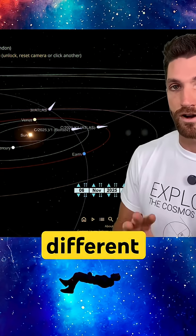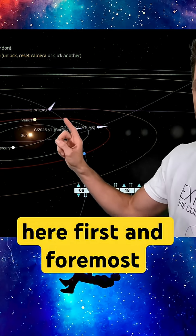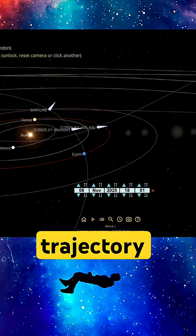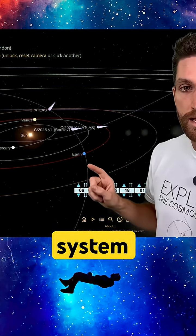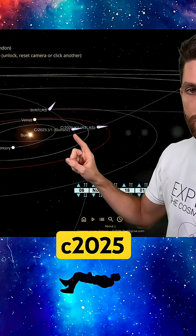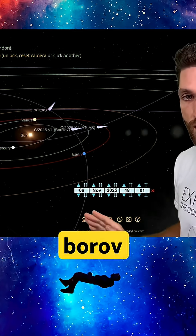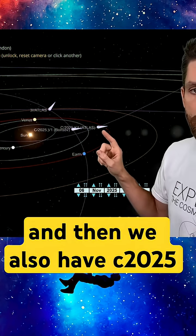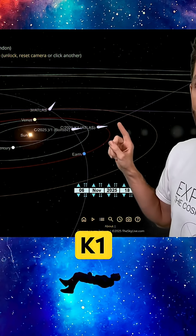We have three different objects plotted here. First and foremost, 3i Atlas. Here's its hyperbolic trajectory cutting through the solar system. Here we have C2025V1 Borisov going like this, and then we also have C2025K1 Atlas.